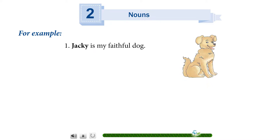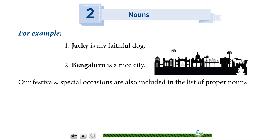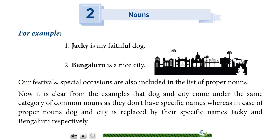For example: 1. Jackie is my faithful dog. 2. Bengaluru is a nice city. Our festivals and special occasions are also included in the list of proper nouns. It is clear from the examples that 'dog' and 'city' come under the same category of common nouns, as they do not have specific names, whereas in the case of proper nouns, dog and city are replaced by their specific names — Jackie and Bengaluru respectively.